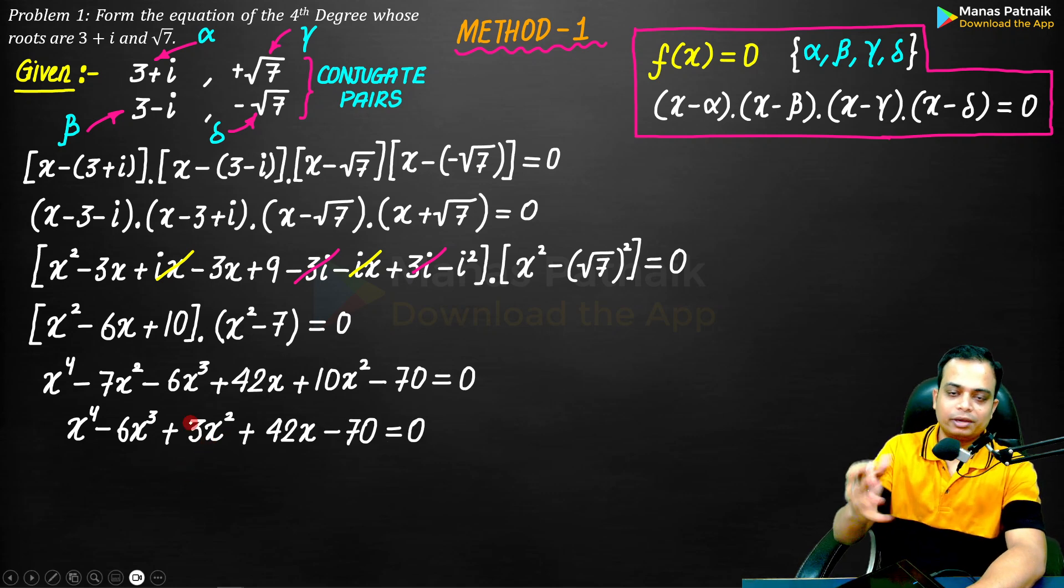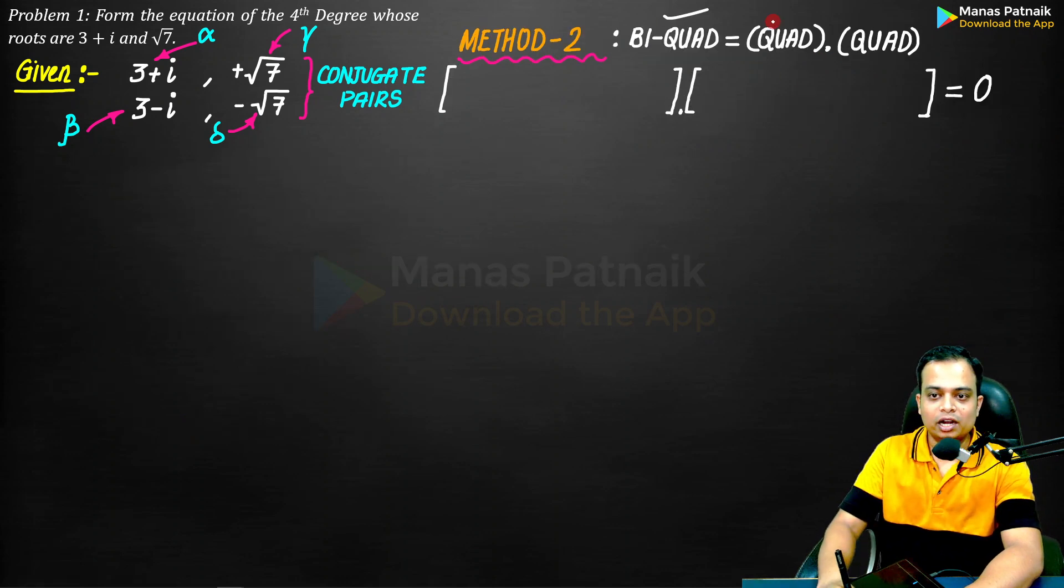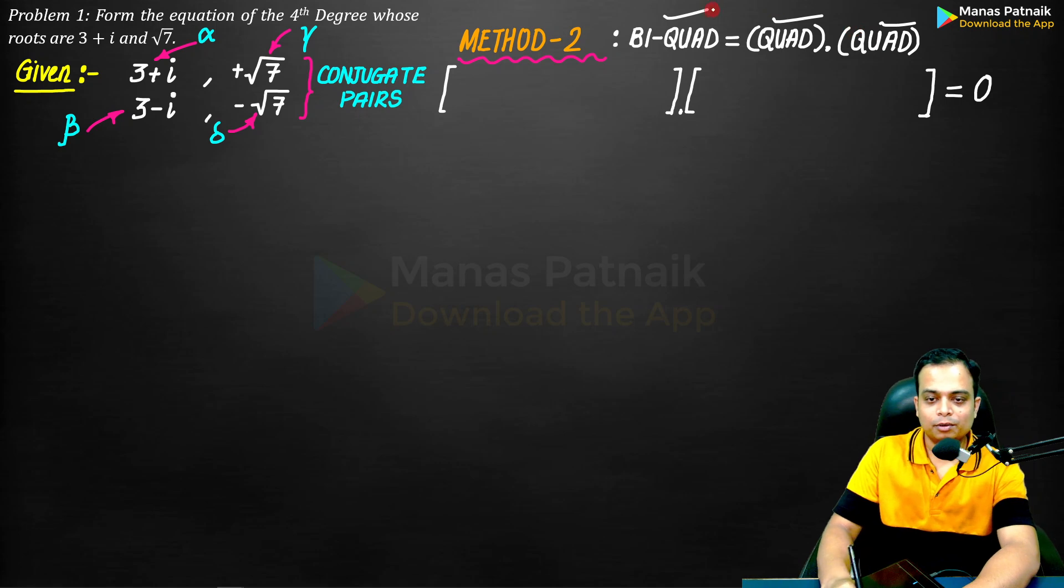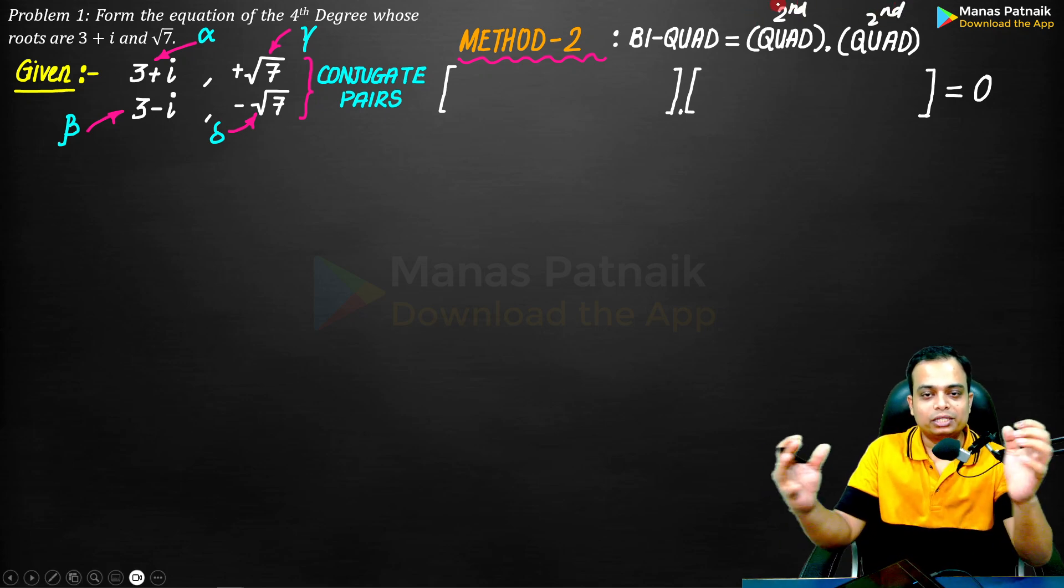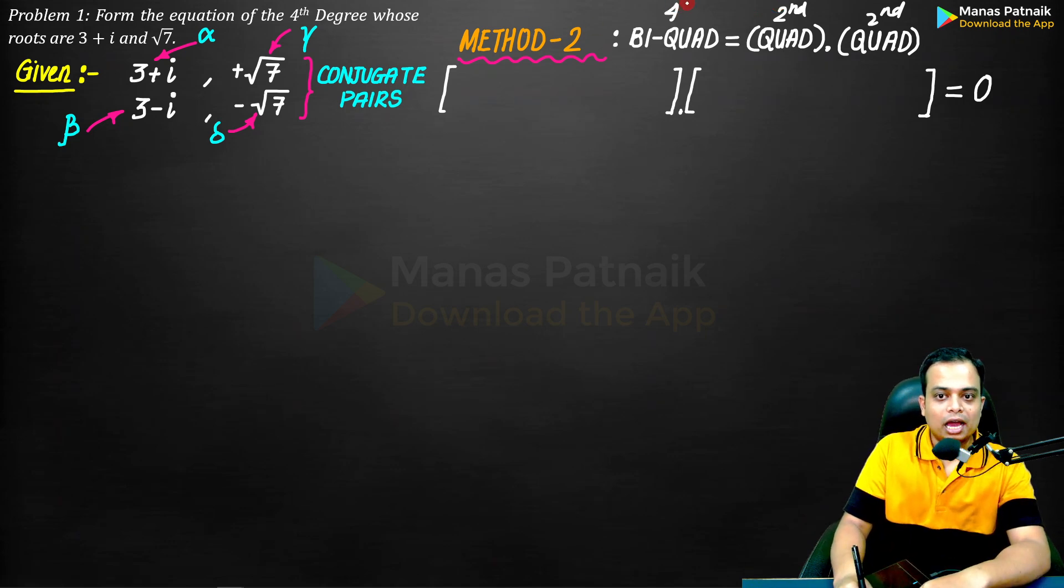There is another approach that you guys can follow. Let me show that. This is what I call the bi-quad equals quad quad approach. Bi-quadratic equation has degree 4, and quadratic is second degree. When these two second degree algebraic equations collide with each other, you have yourself a fourth degree bi-quadratic equation.